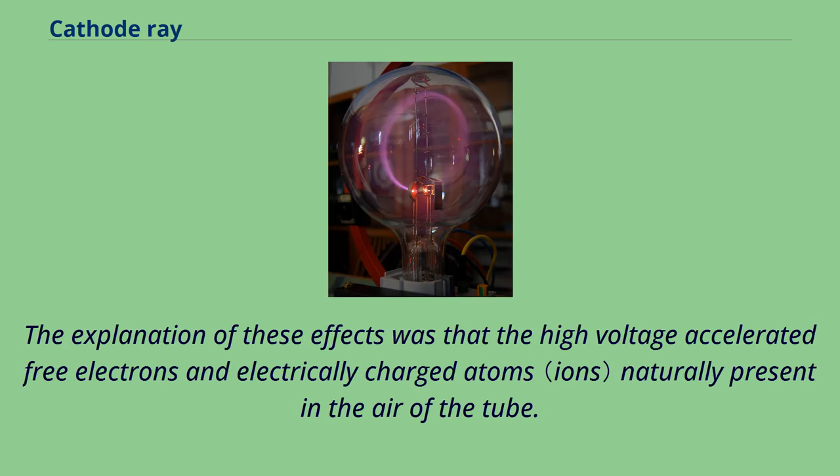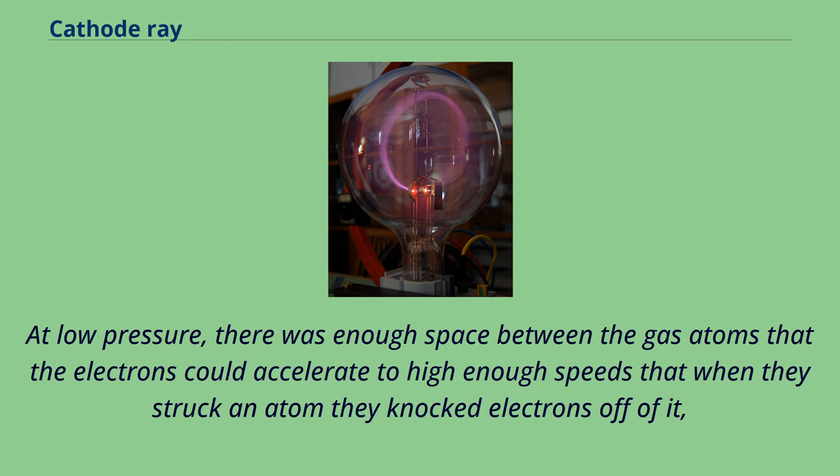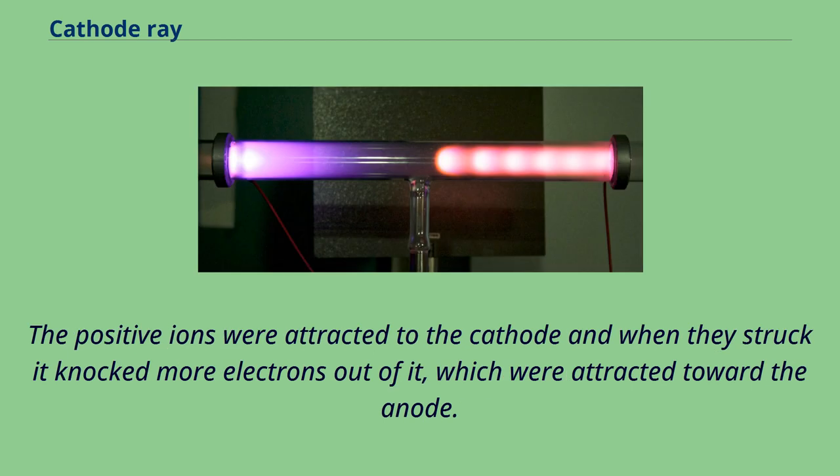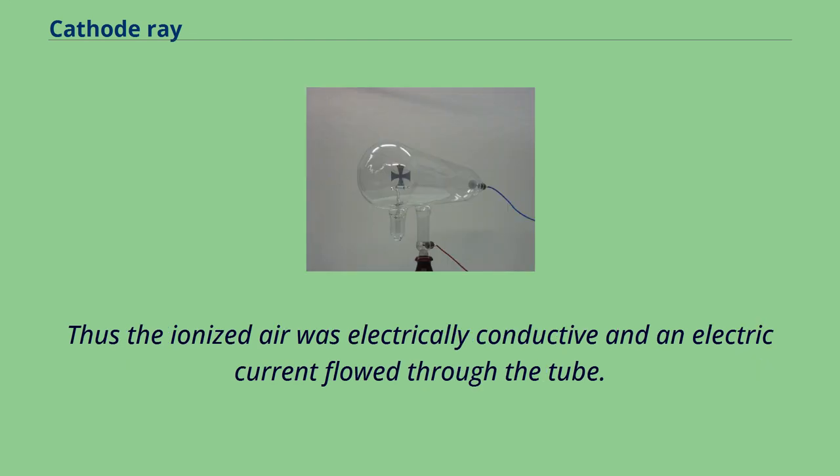The explanation of these effects was that the high-voltage accelerated free electrons and electrically charged atoms naturally present in the air of the tube. At low pressure, there was enough space between the gas atoms that the electrons could accelerate to high enough speeds that when they struck an atom they knocked electrons off of it, creating more positive ions and free electrons, which went on to create more ions and electrons in a chain reaction known as a glow discharge. The positive ions were attracted to the cathode and when they struck it knocked more electrons out of it, which were attracted toward the anode. Thus the ionized air was electrically conductive and an electric current flowed through the tube.